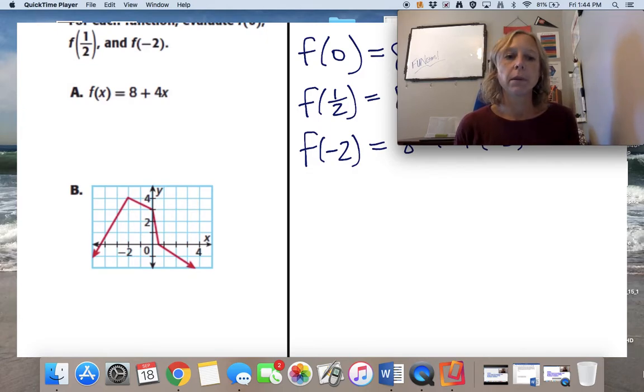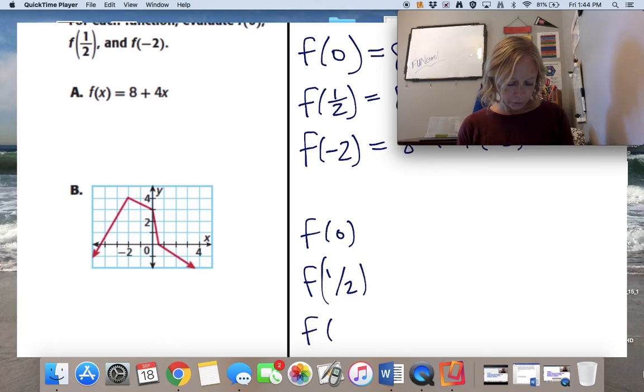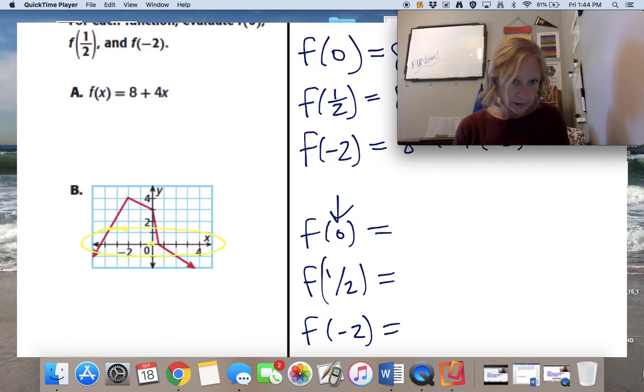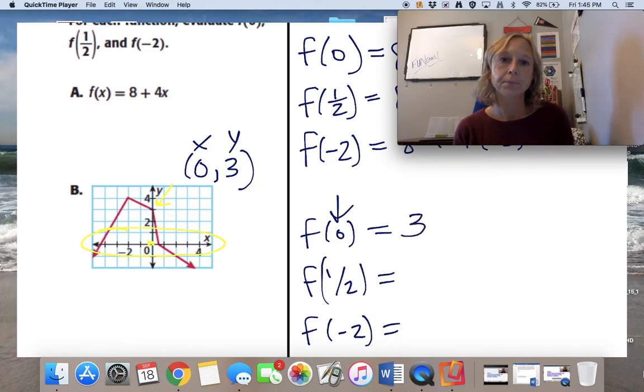Now I have a function here, but this time I'm given the graph instead of the expression. So to evaluate this function at 0, 1 half, and negative 2, I need to find those values of x on the graph. Remember what we see here are x values. So my eyes are going to go to the x-axis and the first place on the x-axis I'm going to find is 0. So 0 is right here on the x-axis. And where does the function cross at 0? Well, it's right here. So I could label that ordered pair that I'm pointing to as 0 over 0 up 3. The x value is 0. The y value is 3. The output is 3.